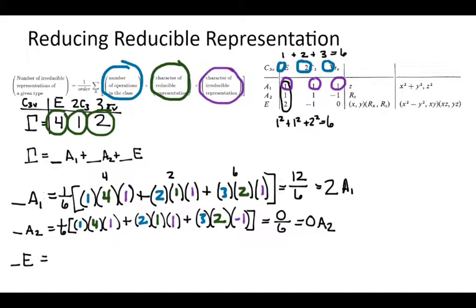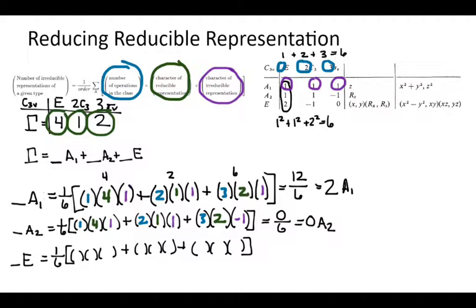Finally, we find how many E irreducible representations there are. We set up the same parentheses. The blue numbers — the number of operations in each class — are the same, and the reducible representation characters are the same. The only thing that changes is the E irreducible representation characters, which are two, negative one, and zero. So we get eight plus negative two plus zero equals six, divided by six equals one E.